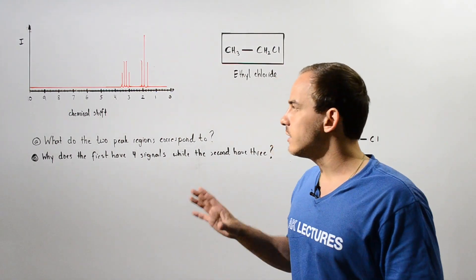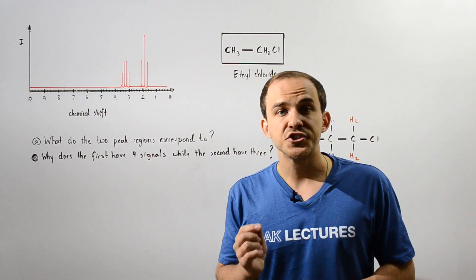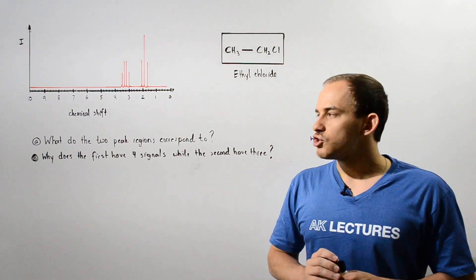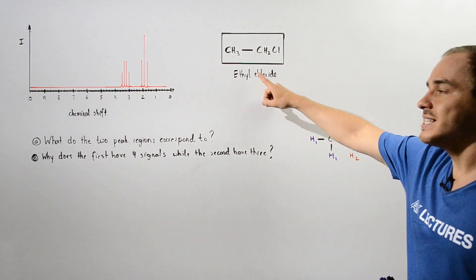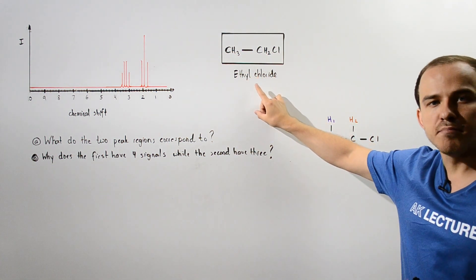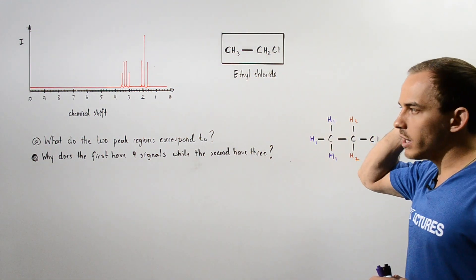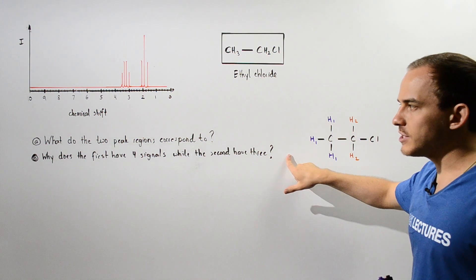So let's take a look at the following example that deals with spin-spin coupling. We are given the following proton NMR spectrum to this ethyl chloride molecule.